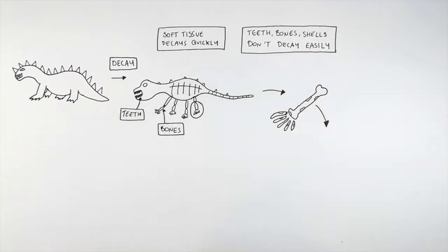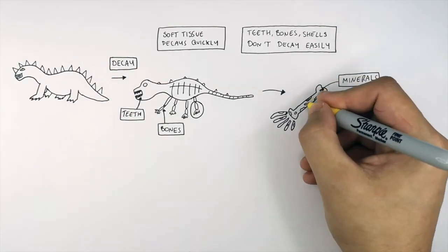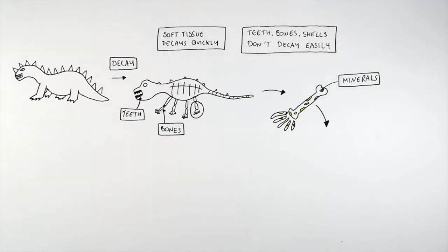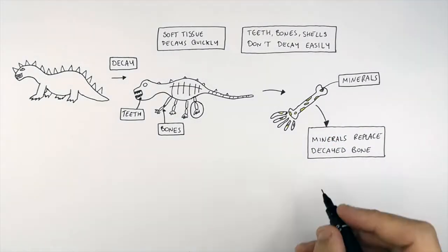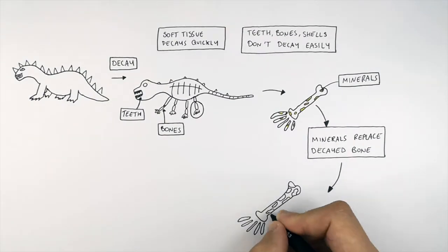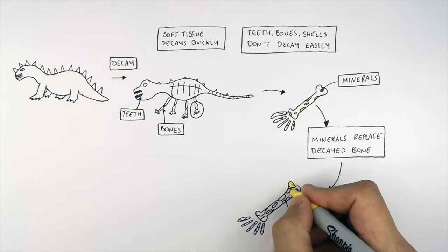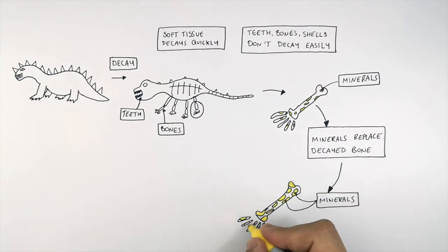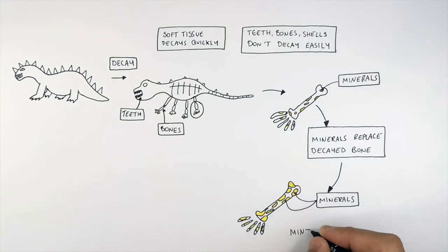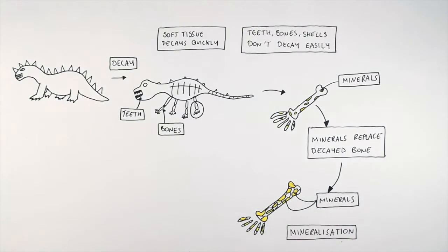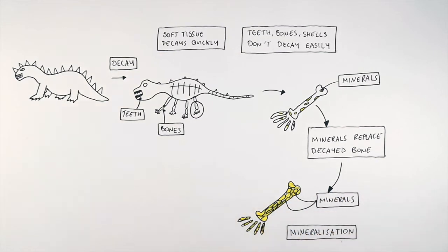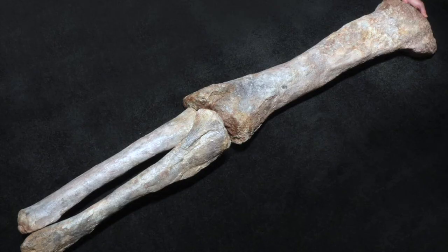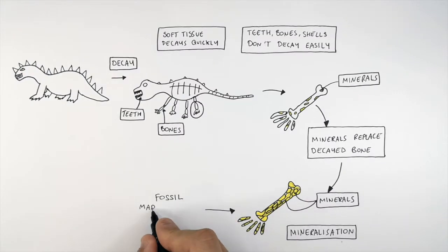This is called mineralization. The minerals are replacing the bone and forming a rock-like substance. As more pressure acts on the bone, more minerals fill the gaps left behind in the decayed bone. As the bone decays over more time, minerals fill all the gaps left behind by the decayed bone in the process called mineralization. This forms a fossil, whereby the fossil is made of rock-like material.